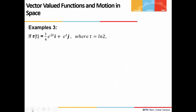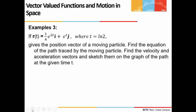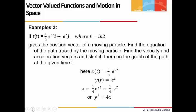Let's take one example. Here, r(t) is the position vector of a moving particle, and we have to find the equation of the path traced by this particle. We also have to find the velocity and acceleration vectors and sketch them on the graph at the given time t = ln 2. We can see x(t) = (1/4)e^(2t) and y(t) = e^t. After we eliminate t, we get y² = 4x. We know that this is the equation of a parabola, so the particle is moving in a parabolic path.